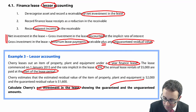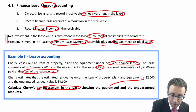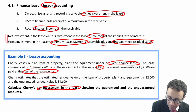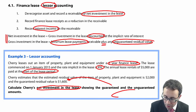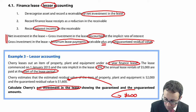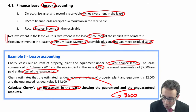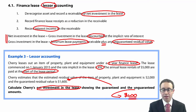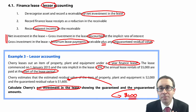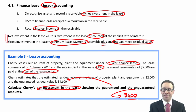So the guaranteed amount is $1,600 and the unguaranteed amount is $400 — being the difference between the $2,000 and the $1,600. It's that $400 that needs to be discounted back from the end of the lease at T5.